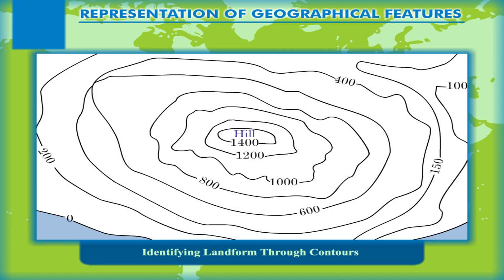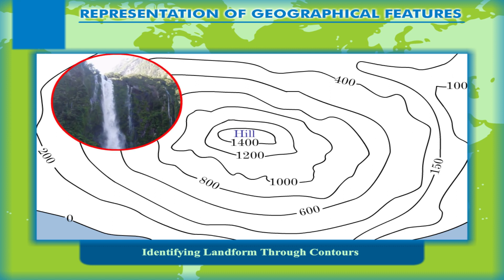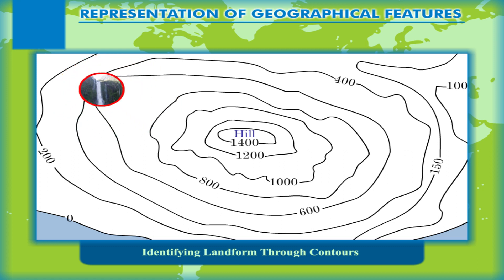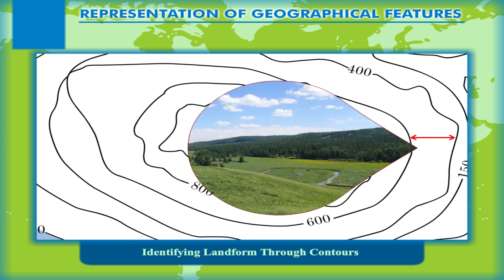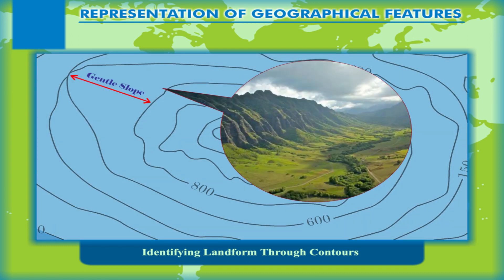Identifying Landforms Through Contours. The contour lines have the following characteristics. The contour lines can never cross each other. When two contour lines having different heights meet, it means that the slope is vertical, like a cliff or a waterfall. The spacing between the contour lines indicates the nature of the slope.